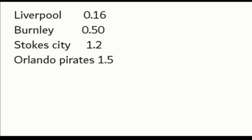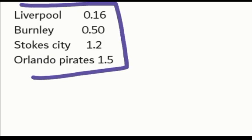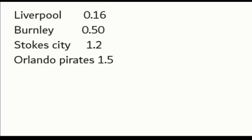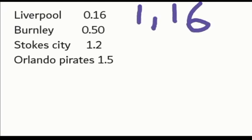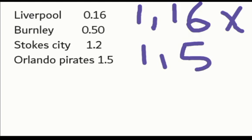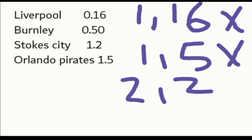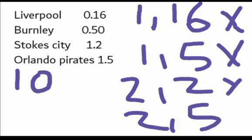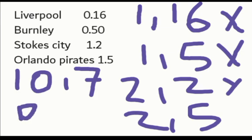But now the question is, what if you have more than one team? In this case, we have 1, 2, 3, 4 — we have four teams. We want to combine them in one ticket. You're going to say it's 1.16 because you add 1, and then you times the next team, which is Bentley, so it's 1.5 because we add 1. And then you times 2.2 because you add 1, and then you times 2.5. You will get 10.7 — those are your final odds. But from that you will minus 1, so you will get 9.7. So those are your odds now.